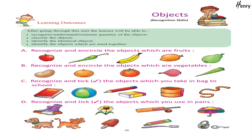Recognition Skill — Learning Outcomes: After going through this unit, the learner will be able to recognize, understand, and estimate the quantity of objects; classify the objects; identify the identical objects; and identify the objects which are used together.